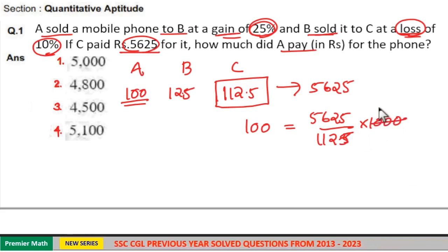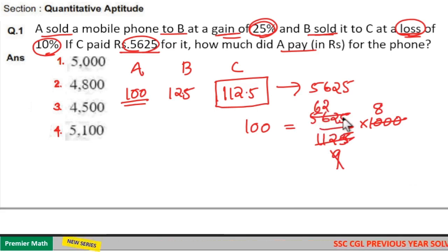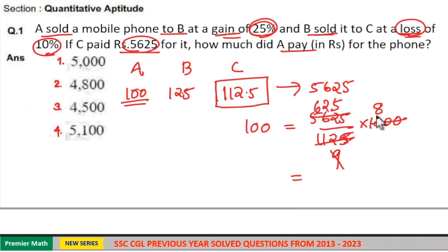Now 125 goes 8 times in 1000. Here 125 goes 9 times in 1125. Now 9 goes 6 times in 56 remaining 2, 9 goes 2 times in 22 remaining 4, 9 goes 5 times in 45. So 625 into 8 is equal to 6 into 8 is 48, 25 into 8 is 200, so 4800 plus 200 is